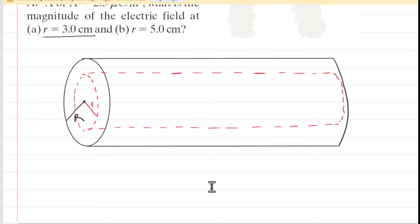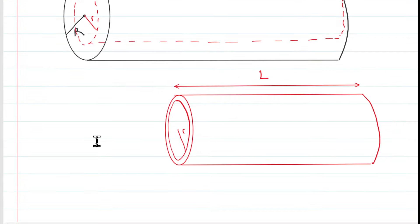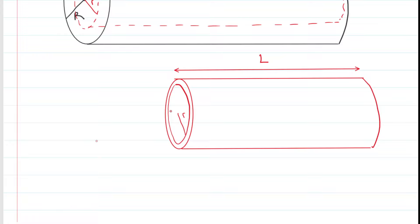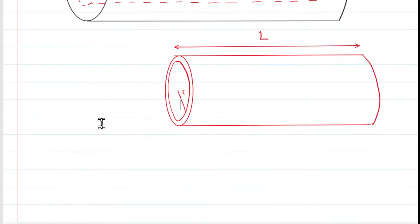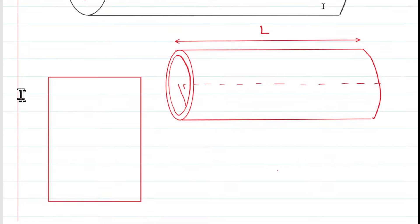To determine the amount of charge within the Gaussian cylinder, we want to imagine dividing it up into a bunch of cylindrical shells. We'll draw one of those shells — it has a very tiny thickness. One way to find the volume of this cylindrical shell is to imagine cutting it longitudinally along its axis and unfolding it. If we do that, we end up with a rectangular shape.